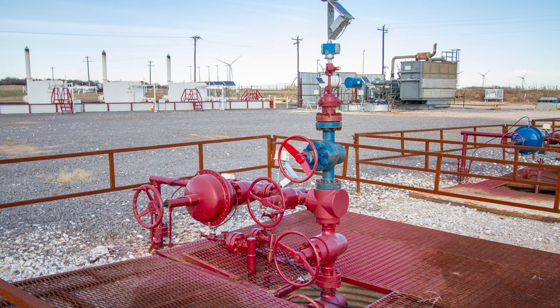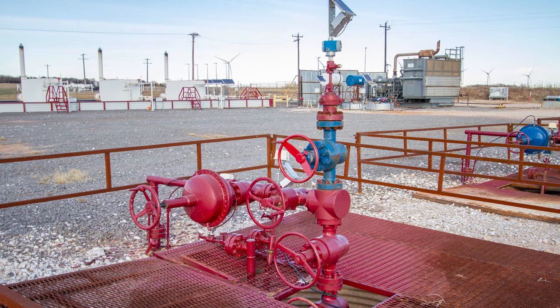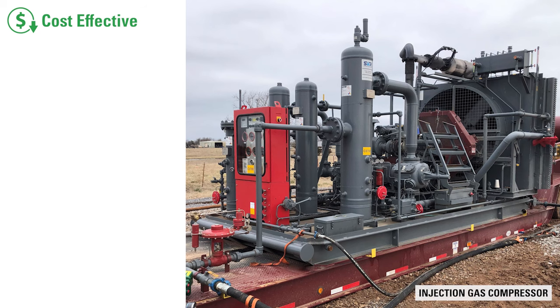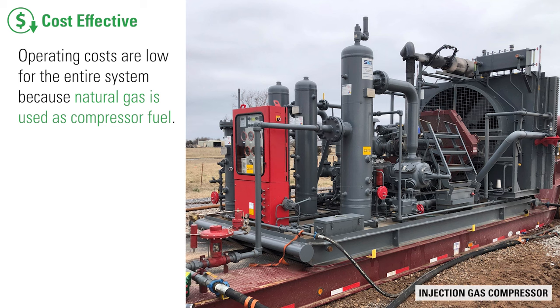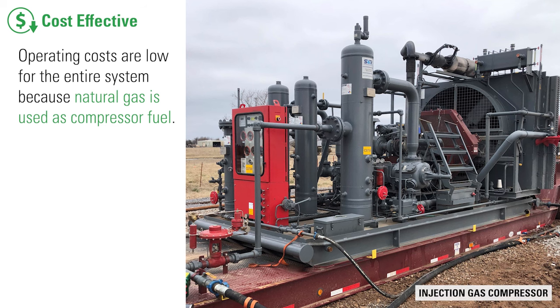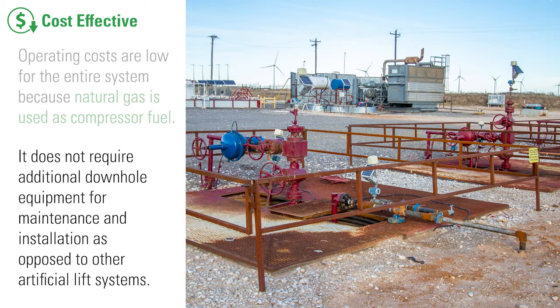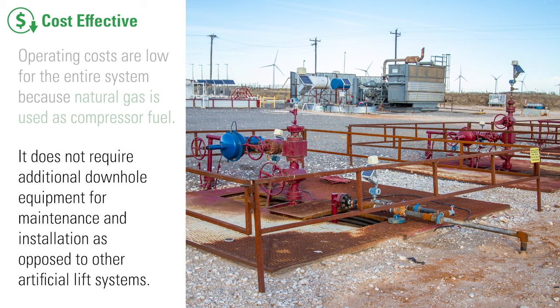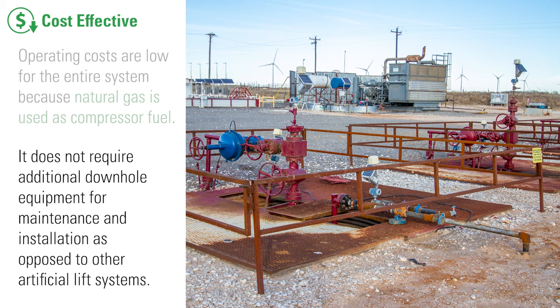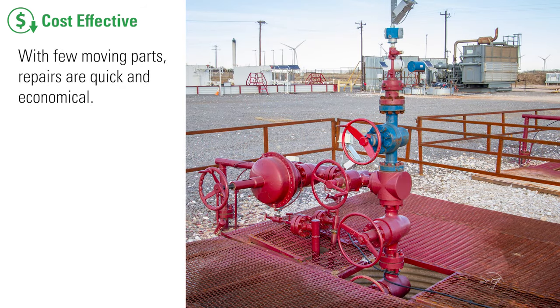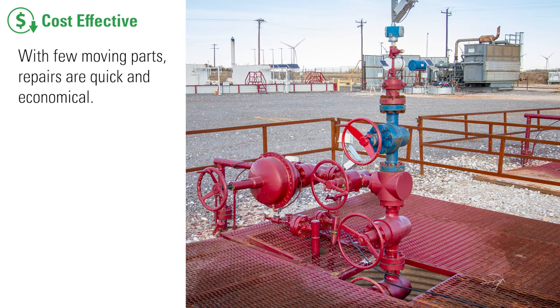Why might a producer choose to use gas lift? The short answer is cost — gas lift will be the most cost-effective form of artificial lift. Operating costs are low for the entire system because natural gas is used as compressor fuel. It does not require additional downhole equipment for maintenance and installation as opposed to other artificial lift systems. With few moving parts, repairs are quick and economical.